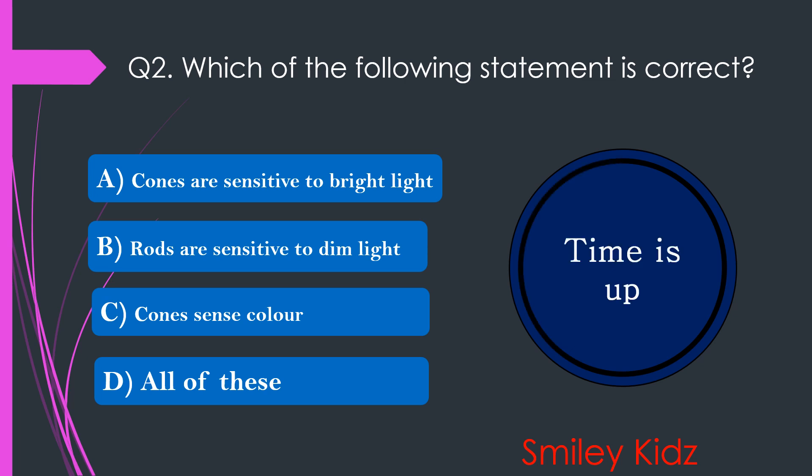Your time is up and the right answer is option D. All of these. Cones are sensitive to bright light, rods are sensitive to dim light, and cones sense color. All of these statements are correct.